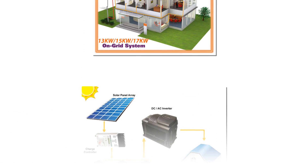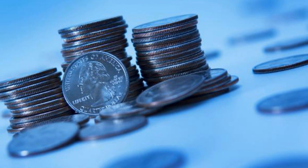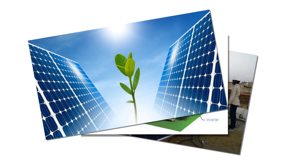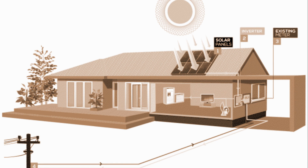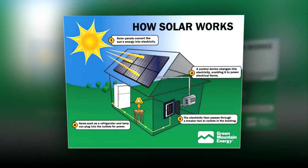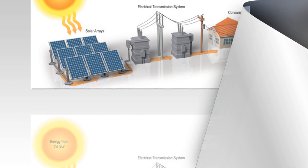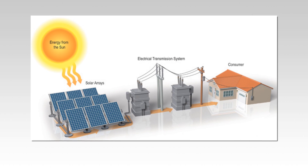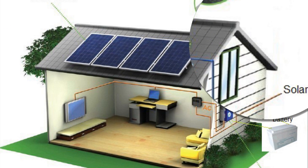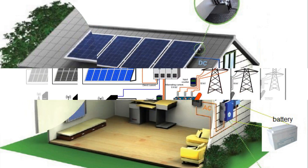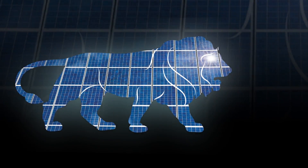Let us understand this with a simple example. A 5kWp grid-connected solar power plant installed at a user's rooftop is expected to produce 4–5 units per kilowatt per day, so a 5kWp solar plant will produce at least 20 units per day. In this example, the user's consumption may be 10 units during daytime and a similar amount at night. After providing 10 units to the user's load, the remaining 10 units are fed into the grid during daytime and the same is received back during nighttime. At the end, the user has produced 20 units via the solar system and utilized all 20 units — 10 during the day and 10 at night — with the help of an on-grid inverter and bi-directional net meter.